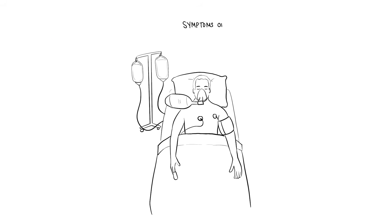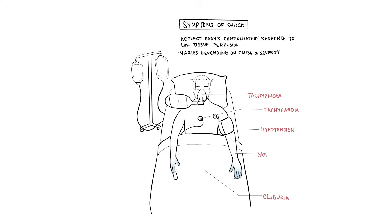The symptoms of shock reflect the body's compensatory response to low tissue perfusion and will vary depending on the cause and severity. The main symptoms of shock include hypotension, tachycardia, tachypnea, oliguria, skin changes including cool, clammy, pale skin with reduced peripheral perfusion, a change in mental state, agitation, confusion, or unresponsiveness.